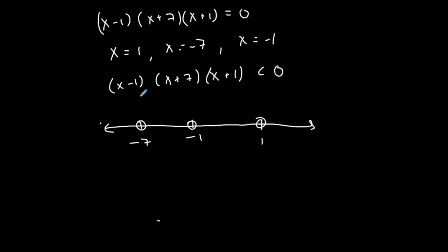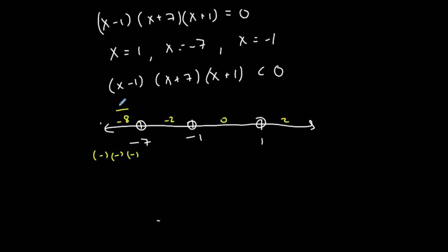I'll use test points to determine which intervals satisfy the inequality. Test x = −8 (left of −7): (−8−1) is negative, (−8+7) is negative, (−8+1) is negative — negative overall, which is what I want, so this interval is part of my solution set. Test x = −2 (between −7 and −1): negative, positive, negative — positive overall, so not part of the solution set.